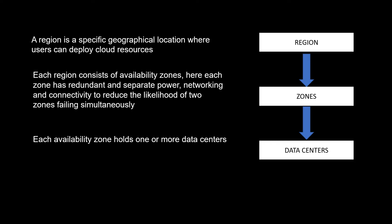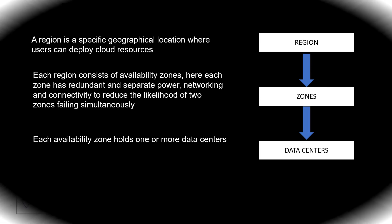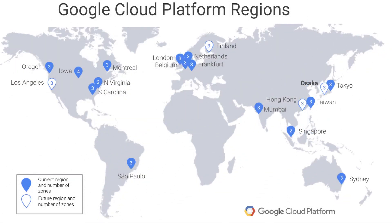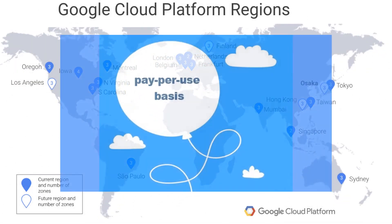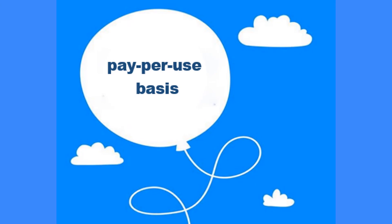GCP is a public cloud vendor, so customers are able to access compute resources housed in Google's data centers around the world for free or on a pay-per-use basis. With Google Cloud's pay-as-you-go pricing structure, you only pay for the services you use — no upfront fees and no termination charges. Pricing varies by product and usage only.